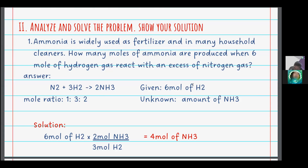First, we balance the reaction where nitrogen reacts with hydrogen to produce ammonia. The mole ratio we get after balancing is 1:3:2. The given of the problem is 6 moles of hydrogen and we need to find the amount of ammonia produced.